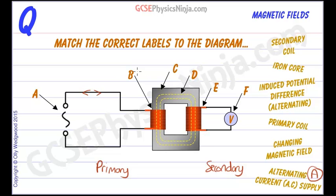First of all, let's label B. B is our primary coil. C is our iron core.